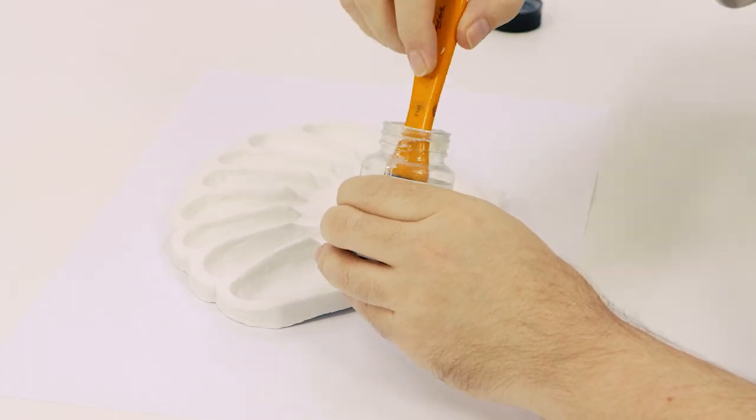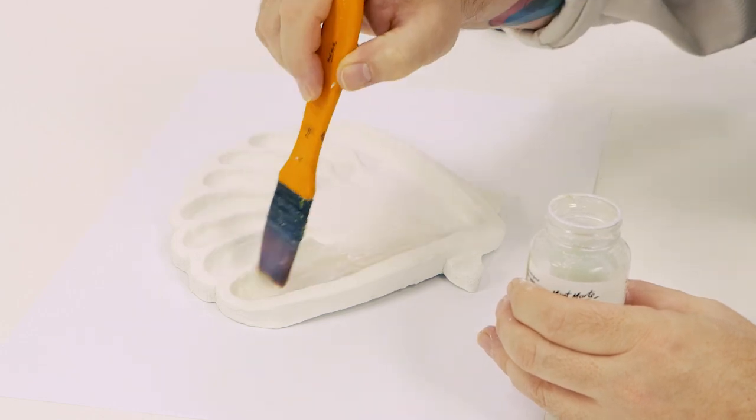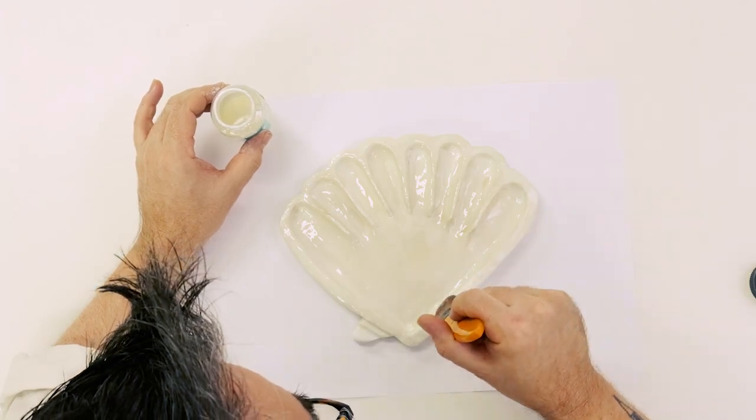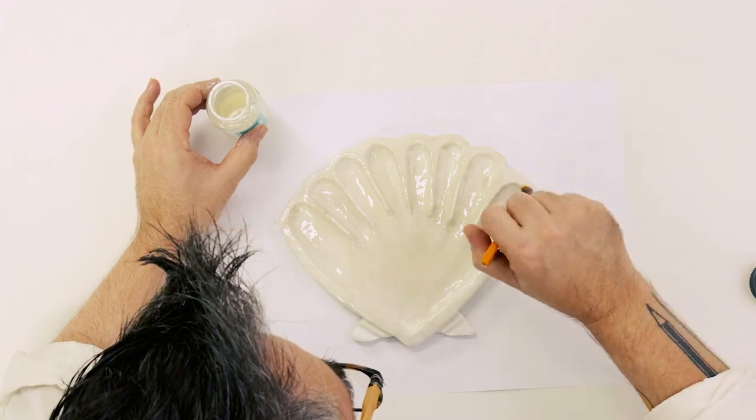Pour a thin layer directly into the palette and using a soft brush, paint an even layer over the palette. Allow the top to dry, then paint the bottom of the palette.